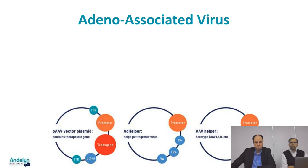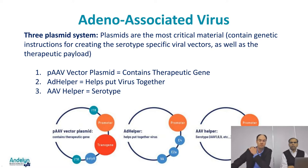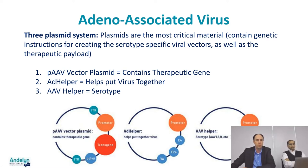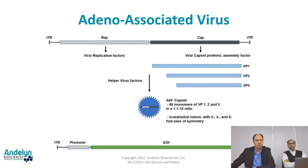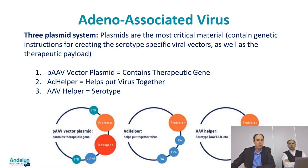The intact virus is produced for gene therapy using a three-plasmid system. The plasmid is the most critical material because it contains the genetic instructions for creating the serotype-specific viral vectors as well as the therapeutic payload. The first plasmid is the AAV vector plasmid, which encodes the promoter and gene of interest. The adenovirus helper plasmid contains the helper factors for assembling the virus. The AAV helper plasmid contains the rep and cap sequences, which defines what serotype will be used.